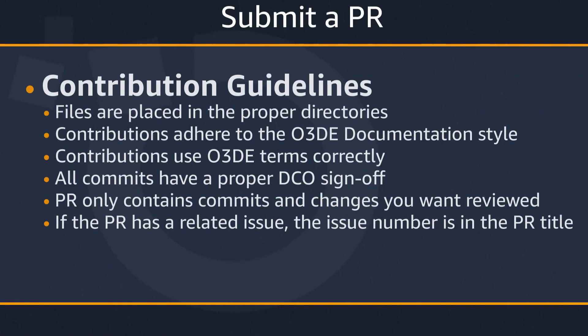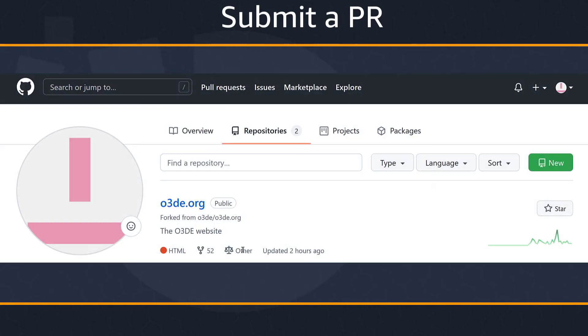When you make an edit or create a new topic in the Open 3D Engine docs, you need to submit a pull request for review before the changes can be merged into the O3DE.org main branch. Before submitting a PR, ensure your contributions meet the following guidelines. One important point: a common first-time error is failing to DCO sign the initial PR. Make sure you have DCO signing enabled in your local Git environment. For more details, please visit the O3DE docs page.